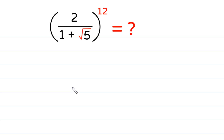Hello, welcome to how to solve this radical problem: 2 over (1 plus square root of 5), whole to the power 12.